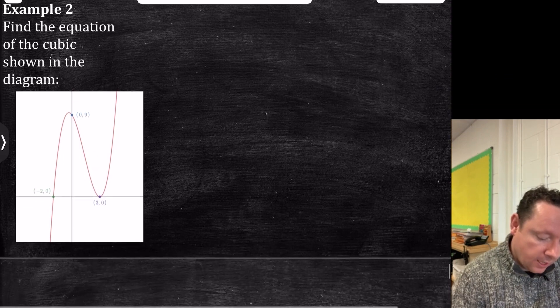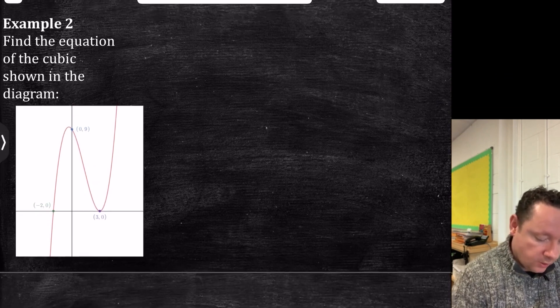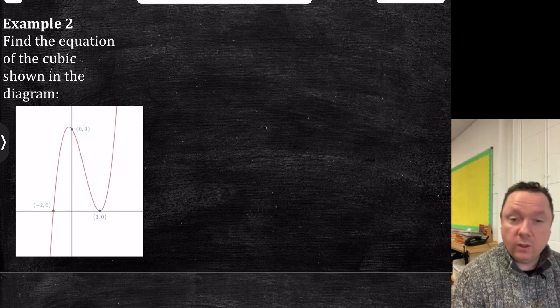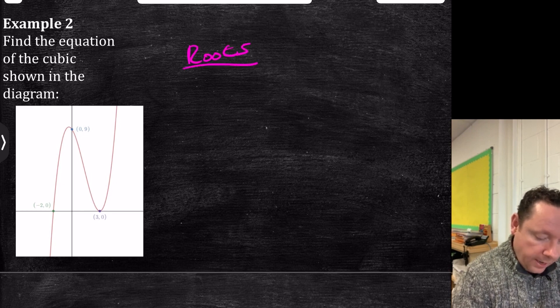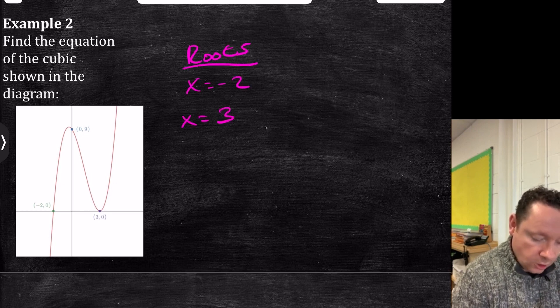So here's an example. Find the equation of the cubic shown in the diagram. There's our roots there, and there's another root there. And then it gives us a random point, remember, so we can work out k. So step one, looking at our roots, we have got x equal minus 2, and x equal to 3, which is repeated.